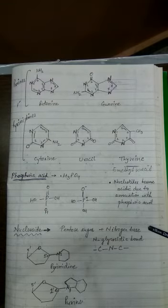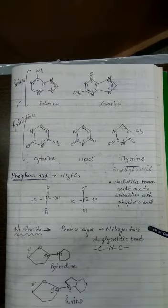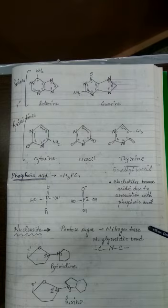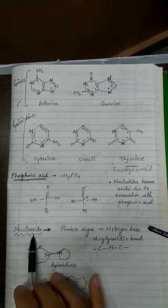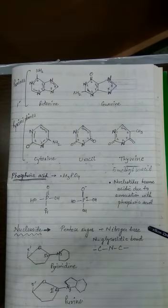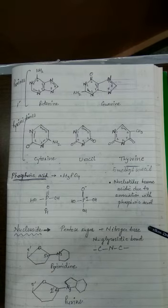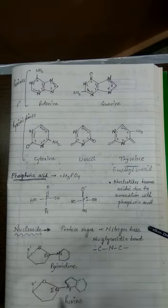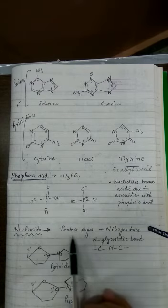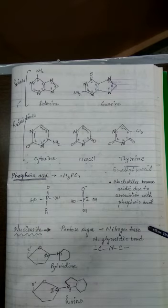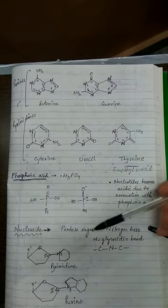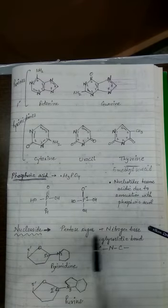Before understanding nucleotides further, it is important to understand nucleoside, which is smaller than a nucleotide. A nucleoside is an intermediate substance in the formation of a nucleotide. Nucleotides are the unit of nucleic acid, while nucleosides are the basic unit of nucleotides — that is, nucleotides are formed from nucleosides. Nucleoside is made up of only pentose sugar and a nitrogen base joined together.